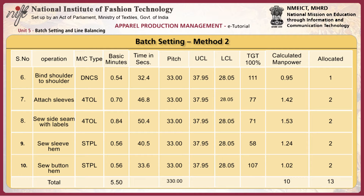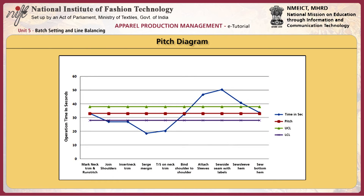This table displays the operation bulletin with pitch time, UCL, and LCL. The upper limit is calculated by adding 10–15% to the basic pitch time, and the lower limit by subtracting 10–15%. Standard limit is ±10%. In the following diagram, UCL and LCL are drawn considering ±15% of pitch time. The pitch diagram is drawn showing operation time, pitch time, UCL, and LCL.